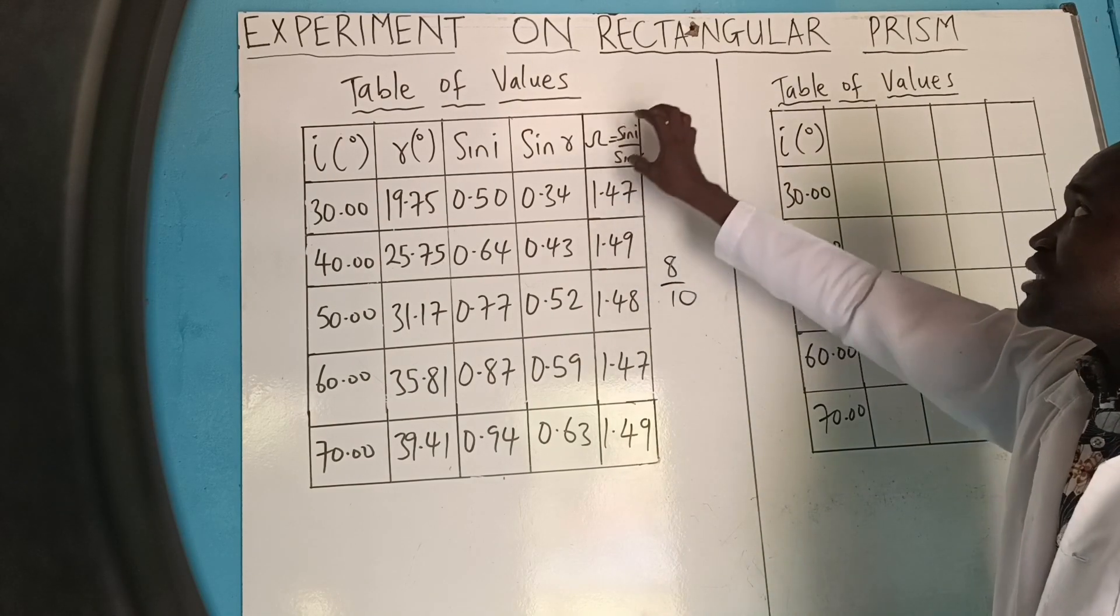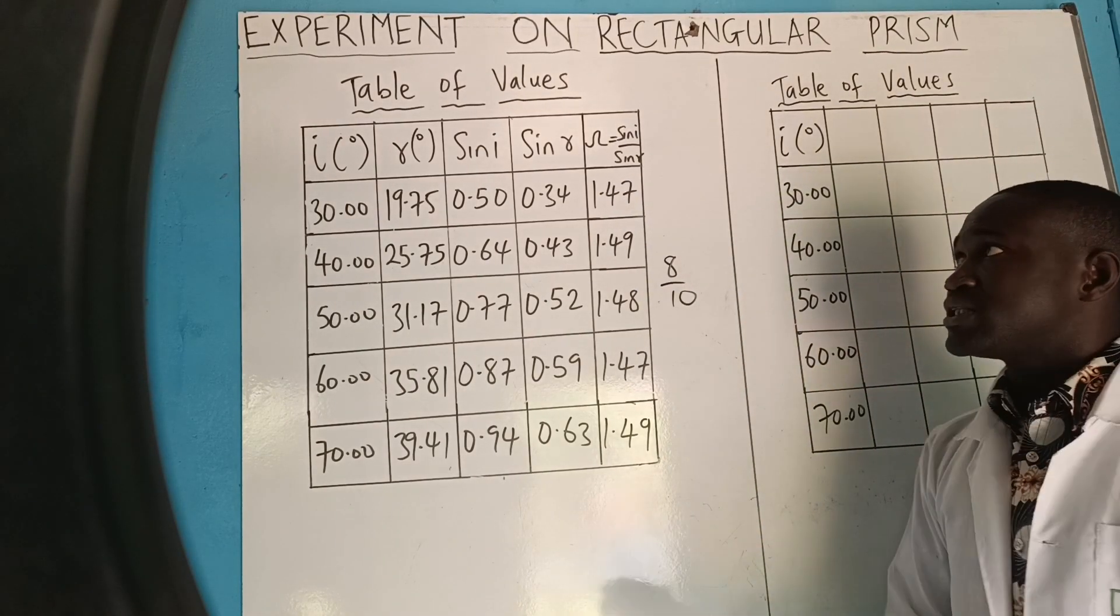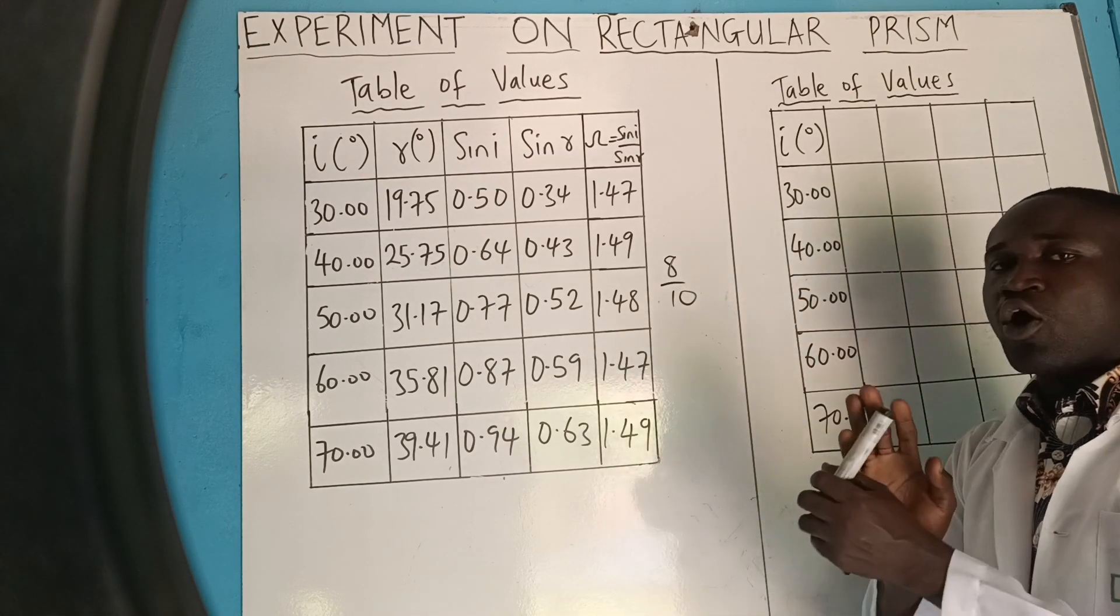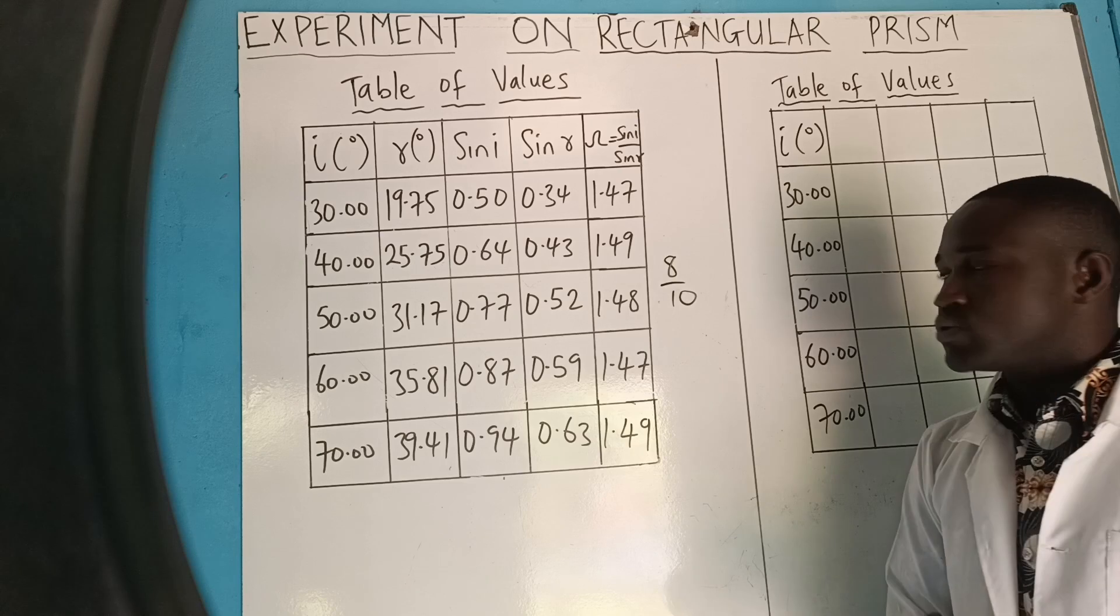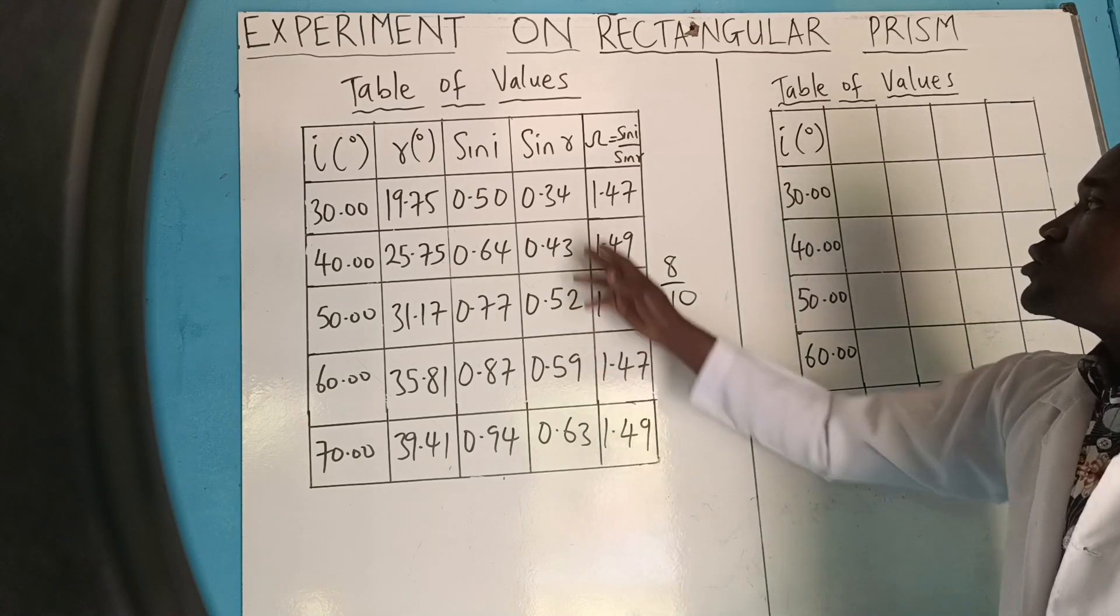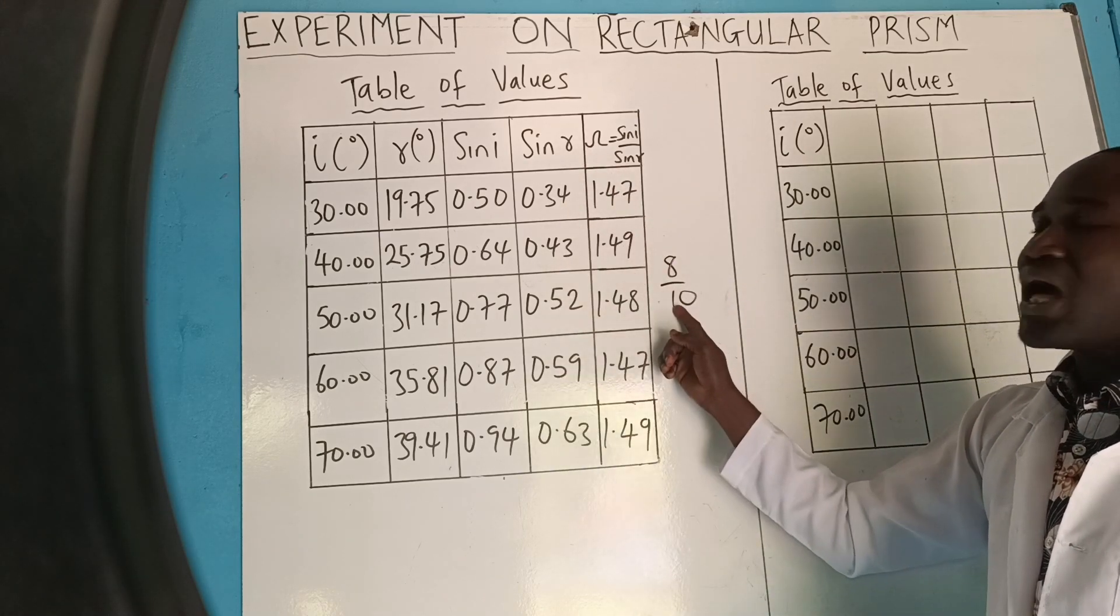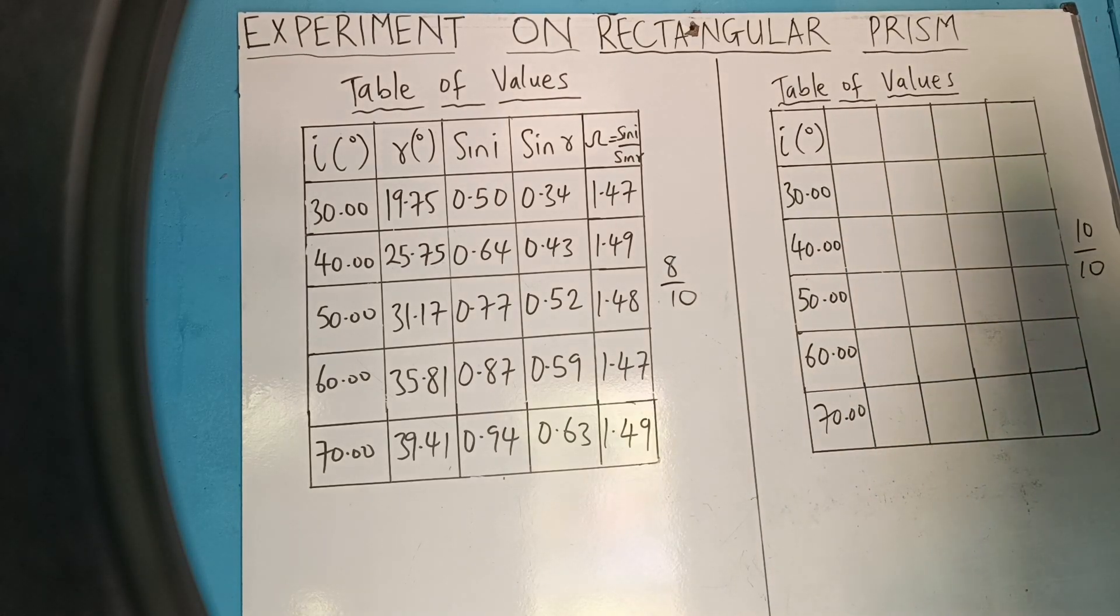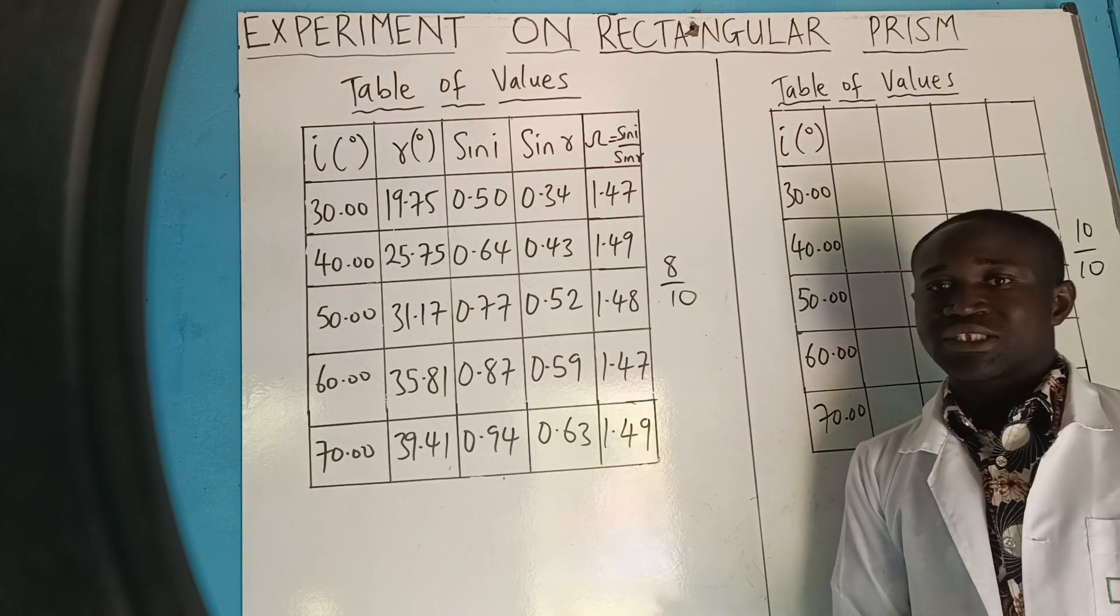Okay, so after you are done with this experiment on rectangular glass prism, that is, you have gotten your table of values, plotted your graph, and answered all the questions they ask you. If someone submits this table, it will be getting about 8 over 10. But if someone submits this table, it will be getting about 10 over 10. Question is, what is the difference?